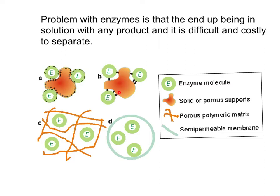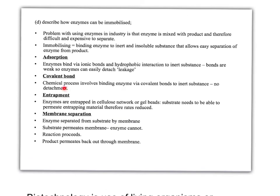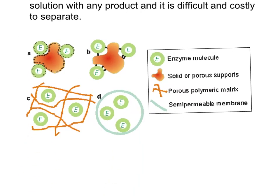The next one is entrapment. Essentially, enzymes are entrapped in a cellulose network or gel beads. The substrate needs to be able to permeate the entrapping material, and therefore the rates tend to be slightly reduced in this case, because it's quite difficult for the substrate to actually get at the enzyme. You can still access the enzyme, but it's not going to be as rapid as other mechanisms. So we've got a matrix of inert insoluble substance — it could be cellulose — and our enzymes are trapped within this meshwork of fibres.